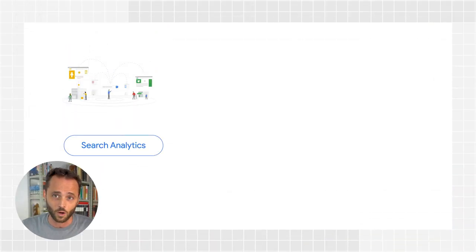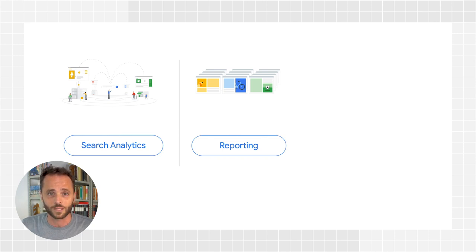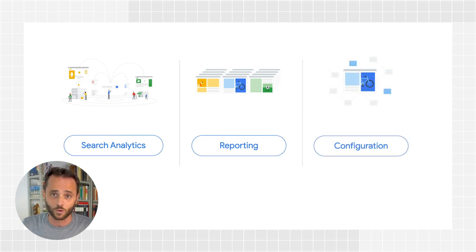There are numerous reports and features in Search Console. We organize them into three main groups. The Search Analytics group displays all the relevant user activity data related to website performance in Google Search. The Reporting group focuses on helping you track issues, debug, and validate fixes on specific pages or entire websites. The Configuration group manages site and user configurations, as well as alert settings.